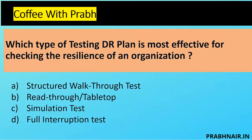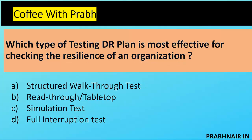Which type of DR testing plan is most effective for checking the resilience of an organization? Structured walkthrough and read-through are removed. Simulation is a role-play exercise. Full interruption test is performed on the primary site — we inform management and customers, shut down servers, and see whether we can restore within the defined MTD. Resilience is about checking absorption of failure and capability to handle disruption, so the answer is D, full interruption test.